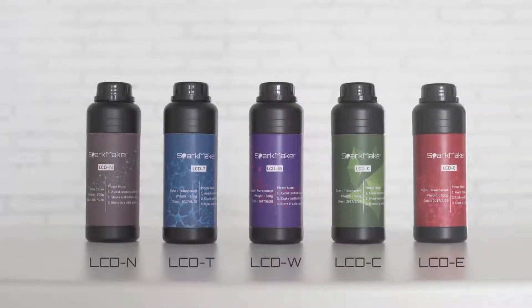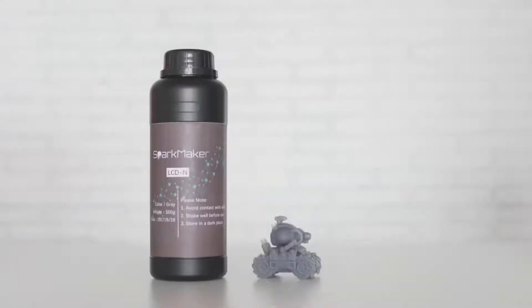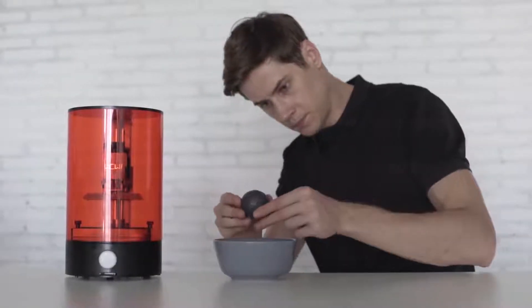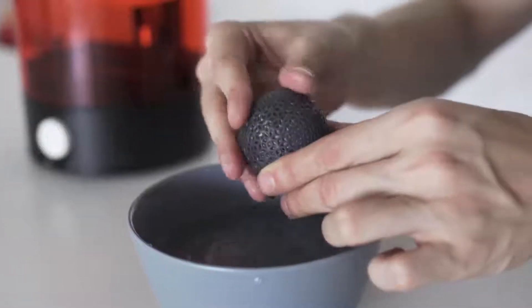SparkMaker comes with 5 types of resins for different objects you want to create. If you don't want to deal with typical resins, we also provide a special resin that can be cleaned by water directly.